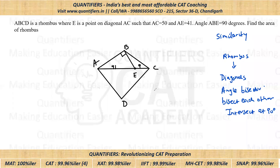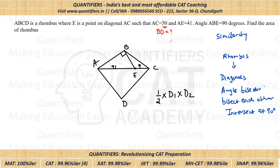And we have to find the area of the rhombus. The area of a rhombus is half into the product of diagonals — half × diagonal 1 × diagonal 2. So this is the given information. One diagonal AC = 50 is already known; if I can also find BD, I'll get the answer. So ultimately I need to find the other diagonal BD. Let us join B and D.